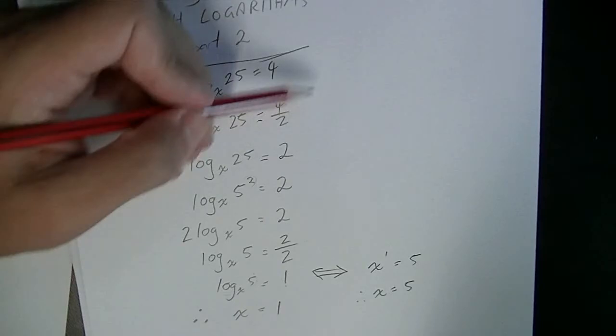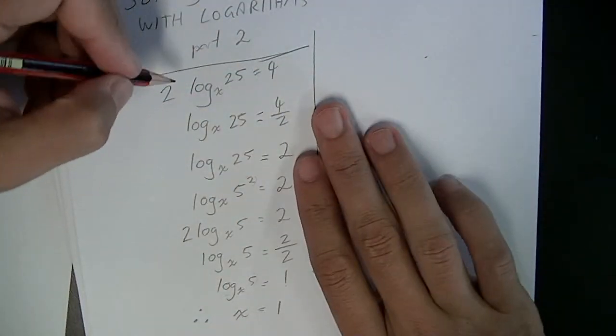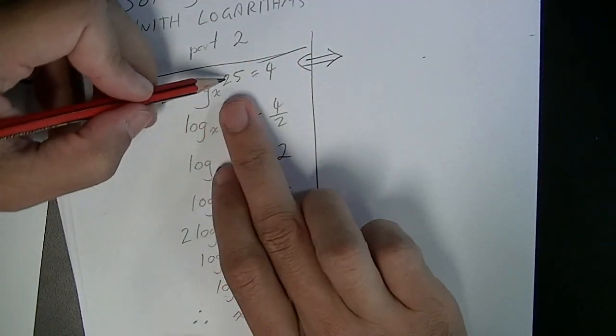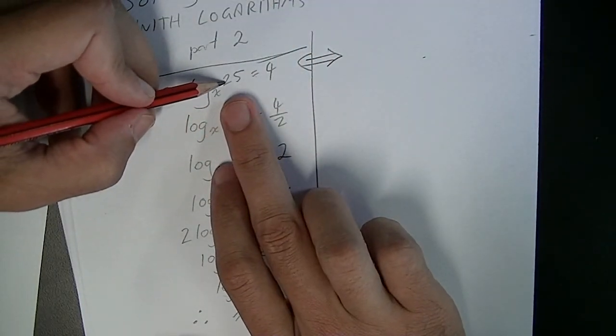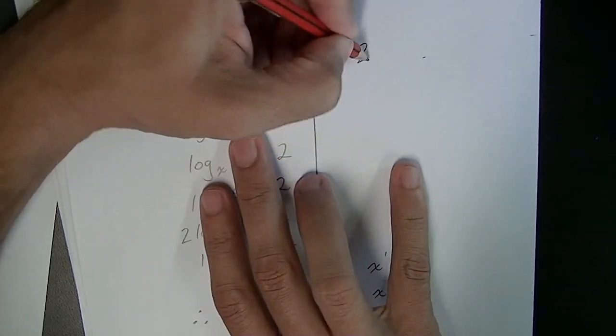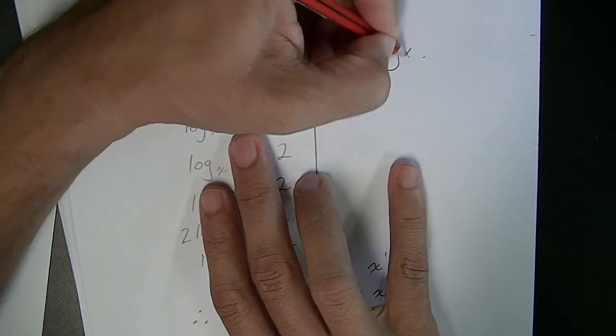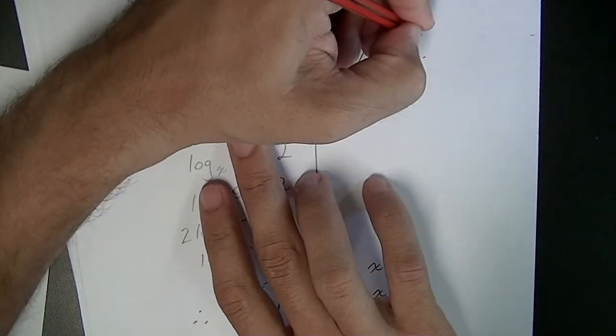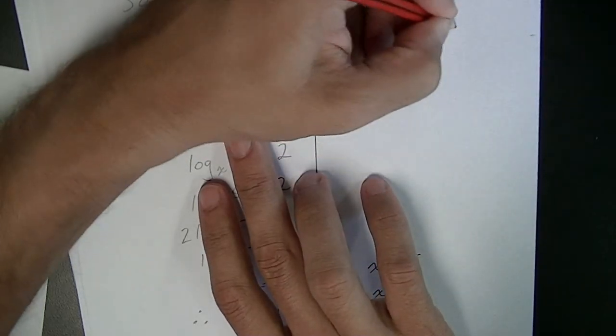Now you could have solved it a different way, it doesn't really matter which order you do things in. So the other way to do this would have been to look at this and do that power bit in your first step. So it would have been 2 log base x of 5 squared equals 4.